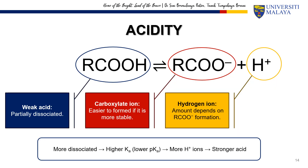Carboxylic acids are weak acids, meaning they partially dissociate in water, releasing hydrogen ions H+ and forming the carboxylate ion RCOO−. The key to acidity lies in the stability of the carboxylate ion — a more stable ion forms more easily, leading to greater dissociation and more H+ in solution. We use the acid dissociation constant Ka to measure this: a higher Ka means more dissociation and greater acidity. Since pKa is the inverse of Ka, a lower pKa indicates a stronger acid.